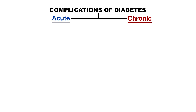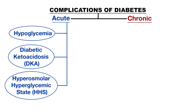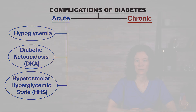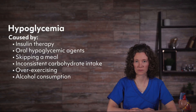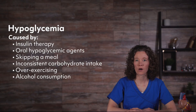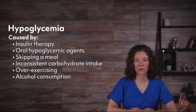Ongoing hyperglycemia will then develop into chronic complications. Let's start by looking at the acute complications that require immediate medical intervention. Hypoglycemia, or a blood glucose level less than 60 milligrams per deciliter, is a potential complication of insulin therapy or oral hypoglycemic agents.